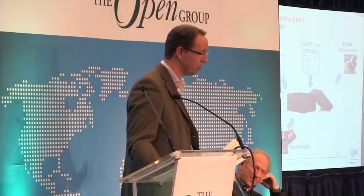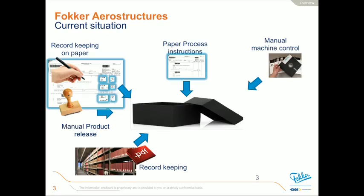This is where we're at right now. We have process instructions — there are barcodes on them and they're connected to systems — but there's still paper, paper documents. These paper documents travel with the product through the factory. On these documents we put our stamps, and then it becomes a record. Every item that we use in the production line has to be traceable. Every action that we perform has to be verified, checked, and we do that by hand.